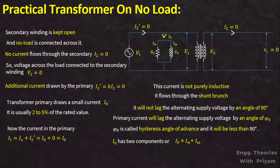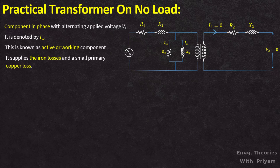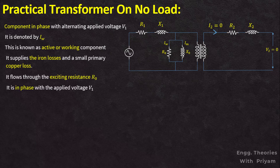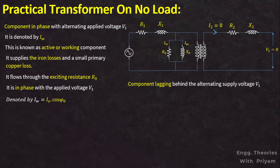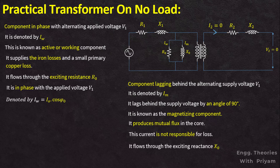The current I₀ has two components: I₀ = Iw + Im. The component which is in phase with the alternating voltage V1 is denoted by Iw and is called the active or working component. It supplies the iron losses, which includes hysteresis and eddy current losses, and a small primary copper loss. It flows through the exciting resistance R₀ and is in phase with the supply voltage V1, denoted as Iw = I₀ cos φ₀. The component lagging behind V1 by 90 degrees is Im, known as the magnetizing component. It produces mutual flux in the core, is wattless, and flows through the exciting reactance X₀.